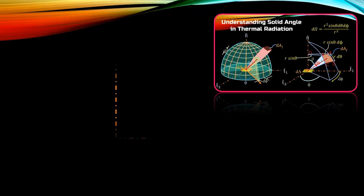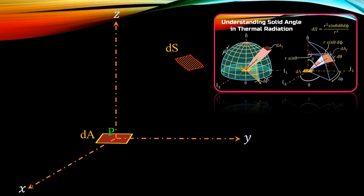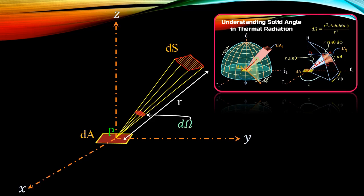In one of my previous videos on solid angle, I had shown if radiation from a point P on surface dA is falling on a surface dS at a distance R, then the solid angle d omega indicates the direction from which radiation is coming to the surface dS.